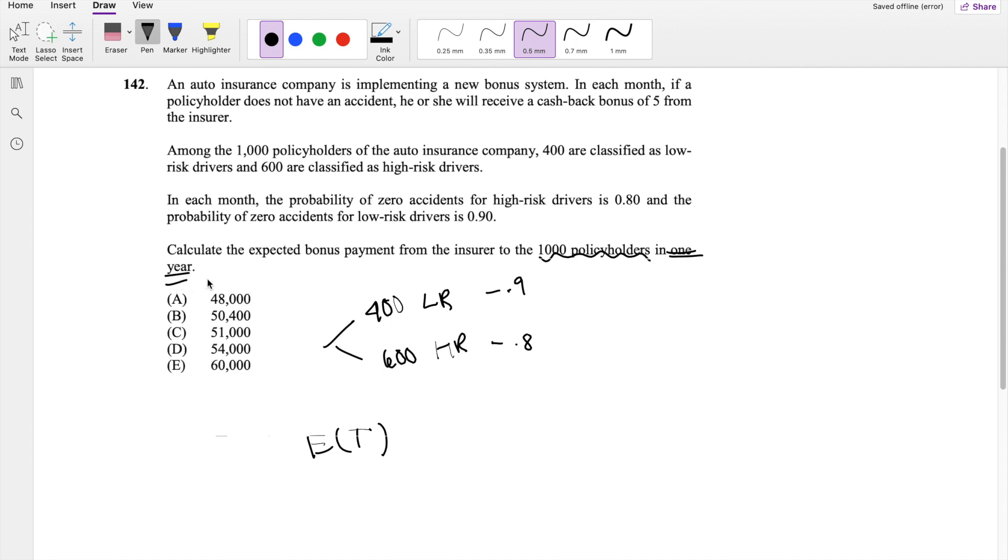Okay, so expected payment for one month is equal to the probability they have no accident, which is 0.9, right? For low risk, and how many low risk people are there? 400. And 0.8 for the high risk people, and there are 600 of them.